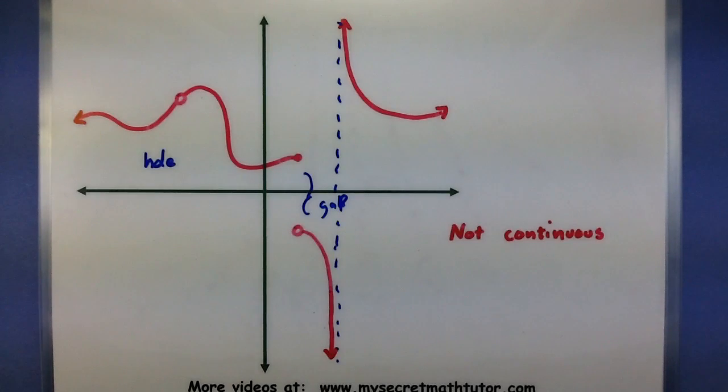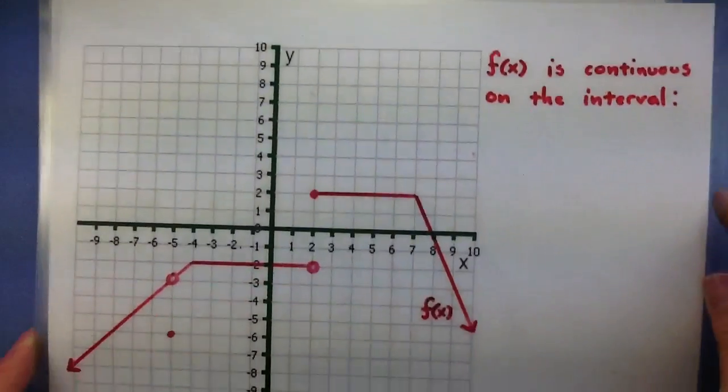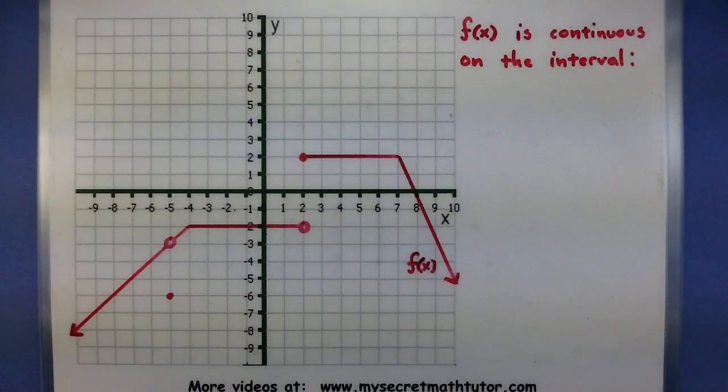Now, even though you might have a function that is not continuous, there might be short intervals where it is continuous. And you can identify these by marking out the x values or packaging up some intervals where it is continuous. Let me show you what I mean.